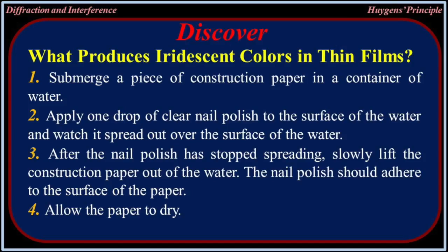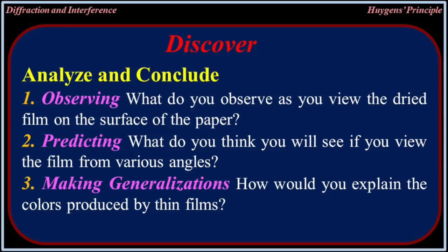What produces iridescent colors in thin films? Activity: Submerge a piece of construction paper in a container of water. Apply one drop of clear nail polish to the surface of the water and watch it spread out. After the nail polish has stopped spreading, slowly lift the construction paper out of the water so the nail polish adheres to its surface. Allow the paper to dry. Observe what you see as you view the dried film. Predict what you will see if you view the film from various angles. How would you explain the colors produced by the thin film?